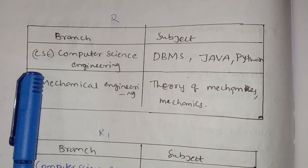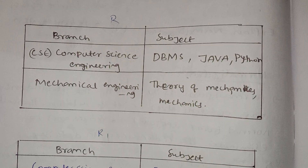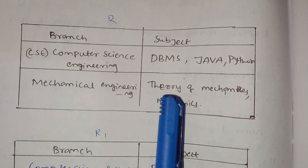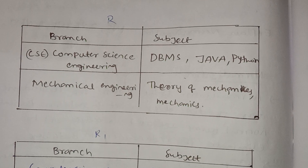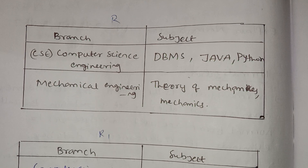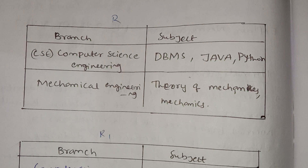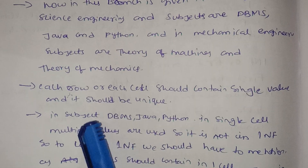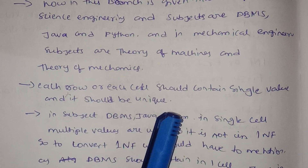In the branches column, branch is CSE. In CSE, we have many subjects like DBMS, Java, and Python. In Mechanical Engineering, there are two subjects: Machines and Mechanics. So now we are going to reduce this — each row or each cell should contain a single value and it should be unique.